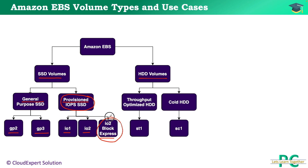On the other hand, HDD volumes have two categories: throughput optimized, called ST1, and cold HDD, called SC1. If you are appearing for AWS certification, you should remember these code names: GP2, GP3, IO1, IO2, ST1, SC1. Most of the time, AWS certification questions will use these codes, not the full names. If they say ST1, they are talking about throughput optimized. If they say SC1, they are talking about cold HDD.